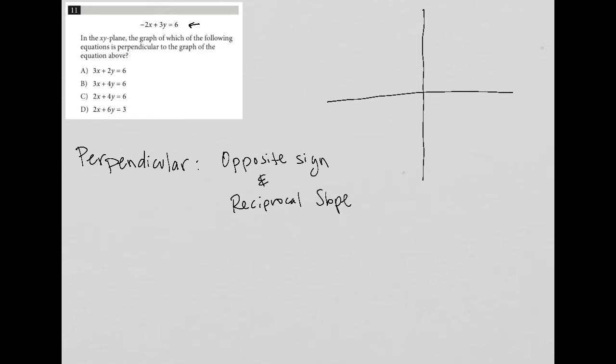So I need to first and foremost figure out what is the slope. So in fact, I don't need this graph. What is the slope of the original question? So I have negative 2x plus 3y equals 6.